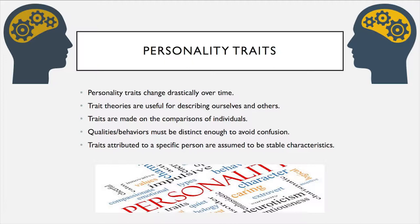There are three assumptions made about traits. Traits are based on comparisons of individuals. This is due to the fact that there are no absolute quantitative standards for concepts such as friendliness. Qualities and behaviors must be distinct enough to avoid confusion. It would be difficult to differentiate between behaviors if they shared things in common. Imagine the confusion if friendliness and aggressiveness shared common behaviors.